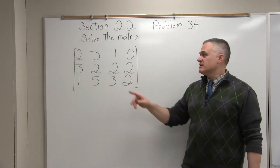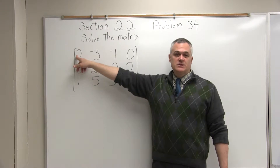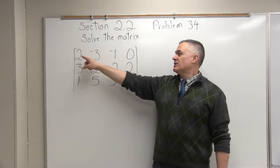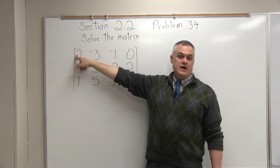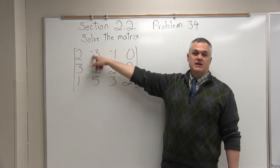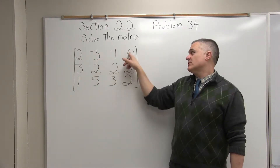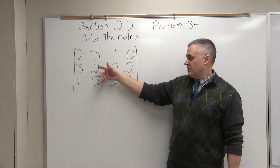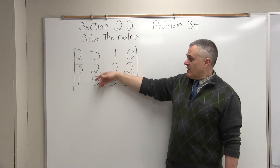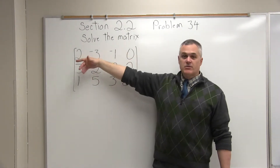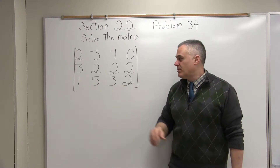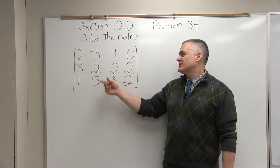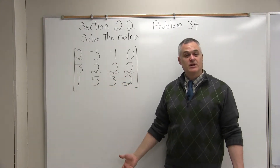Step one in solving a matrix like this is to get a 1 in the upper left-most position. Right now it's a 2. There are two ways I can make that 1 show up. One of them is multiply the top row by 1 over 2, which would make some fractions — I'd have negative 3 over 2, negative 1 over 2. The other option would be to swap row 1 and row 3. If I bring row 3 up, I'd get a 1 in the upper left where I need it. Both options work and will lead to the same answer. One makes fractions, the other doesn't, so I would prefer the option where I don't get fractions.